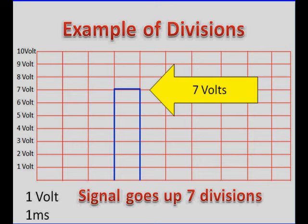Let's start with a simple square pulse. It goes straight up seven of those divisions and is about seven volts. Because remember, we're on one volt per division and this takes seven divisions.